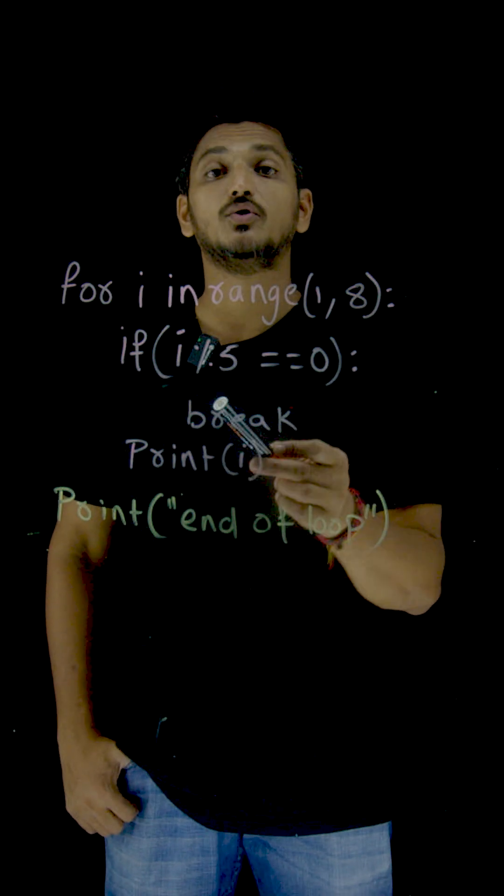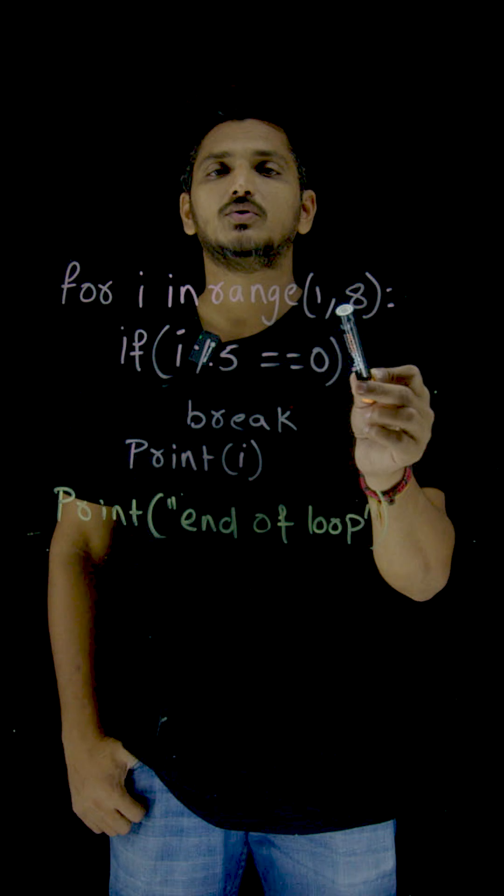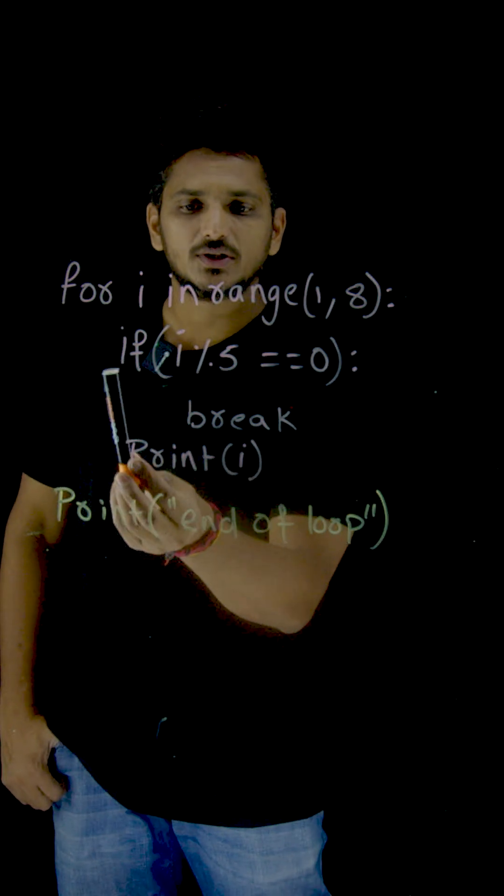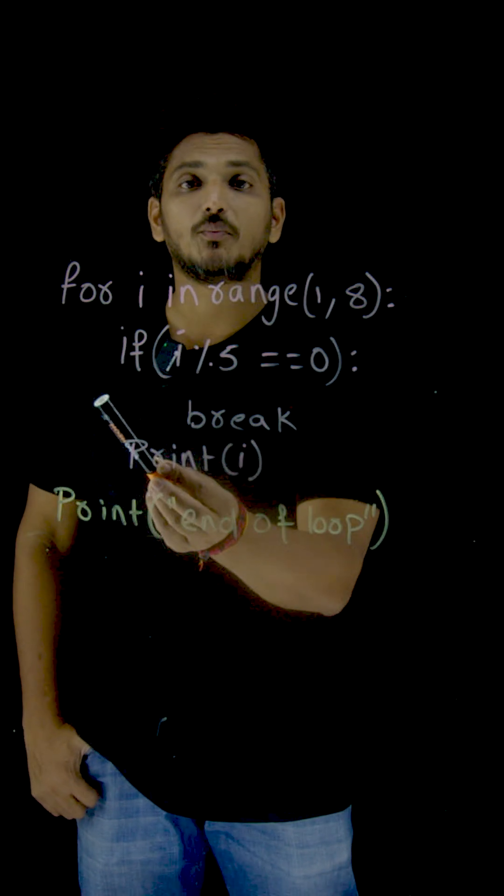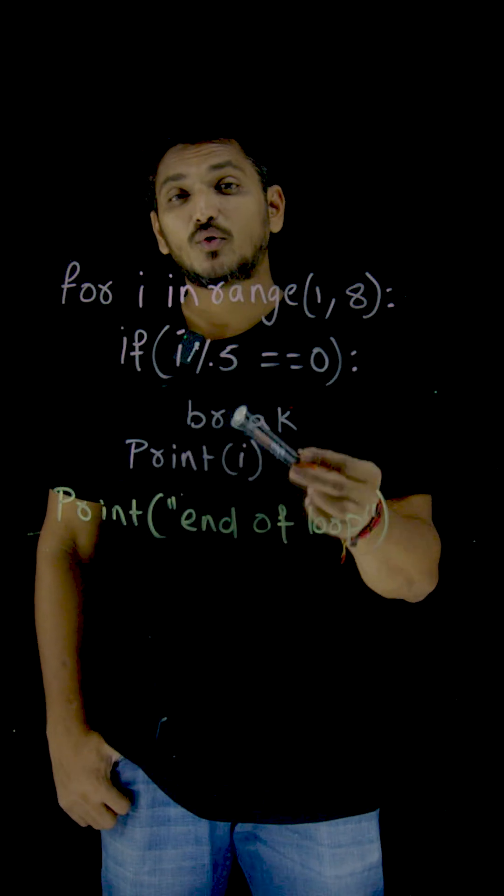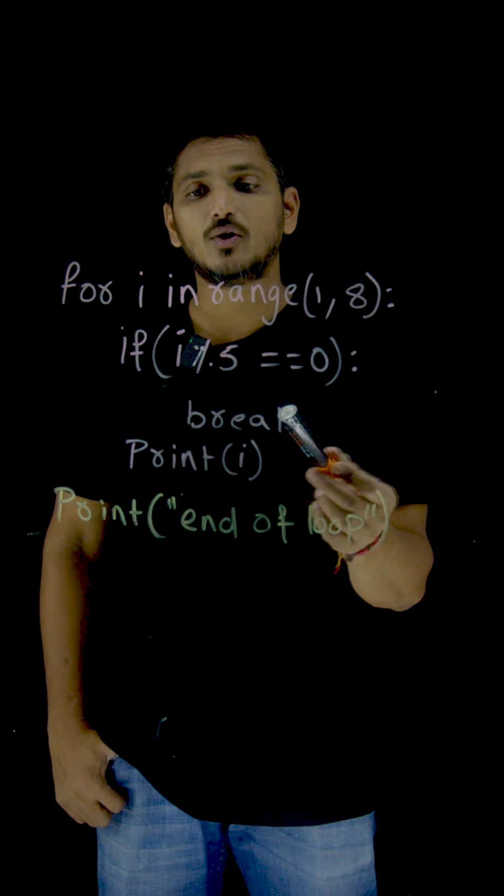This loop is going to execute for values 1, 2, 3, up to 7. So the body of the loop, these three lines of code belong to the body of the loop. Why? We followed indentation. And what we have written inside this body of the loop?